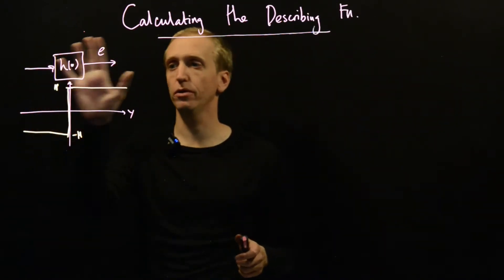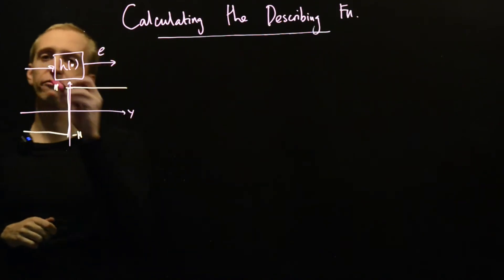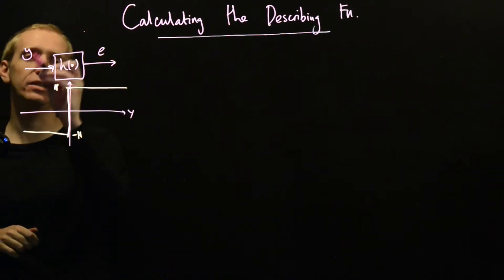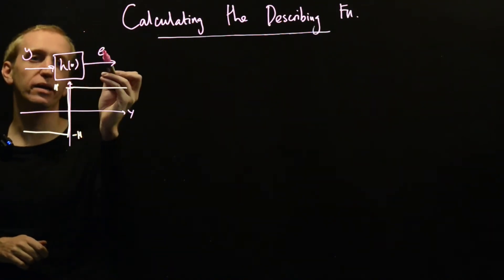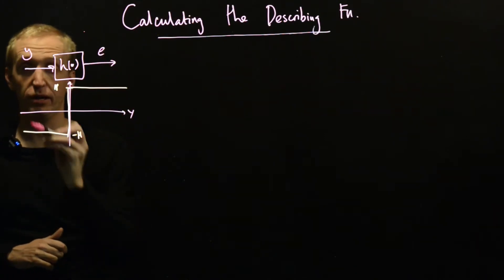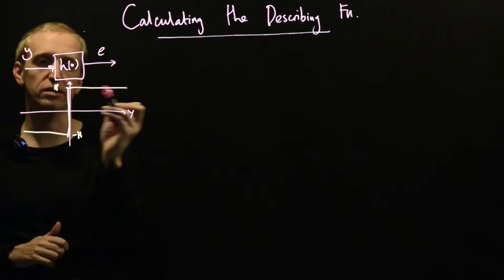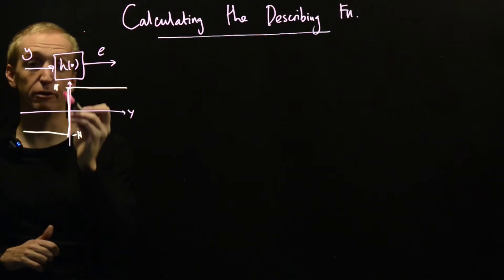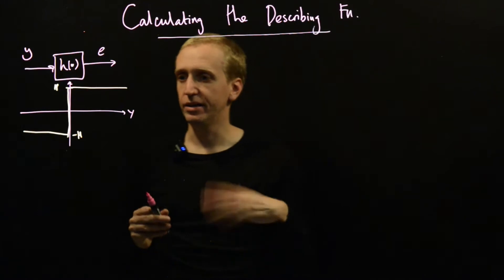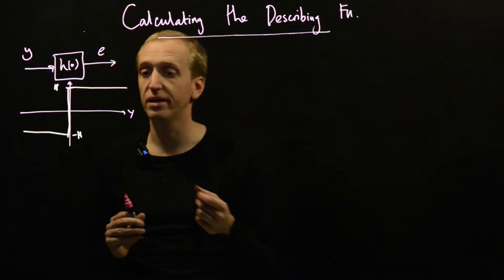So we're going to focus on the setup where I have some static nonlinearity with input y and output e, and we're going to focus on the special case that the static nonlinearity actually looks like this orange curve here. And this type of nonlinearity is called a relay.